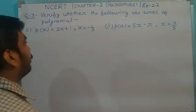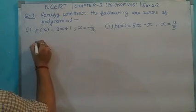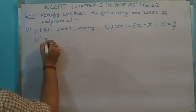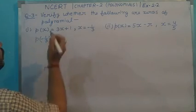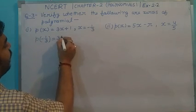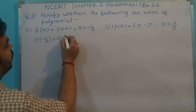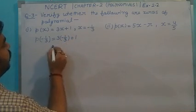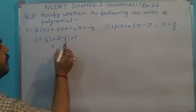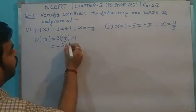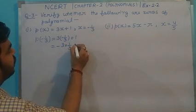p(x), now we will calculate it for x = -1/3. Put -1/3 wherever you find x plus 1. Now open the bracket. Minus plus minus 3 multiply 1/3 plus 1.